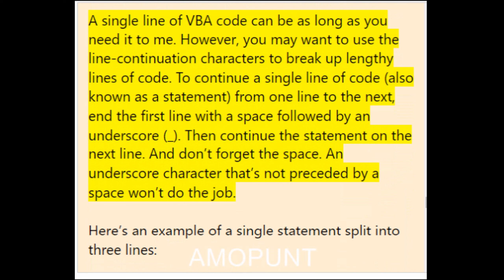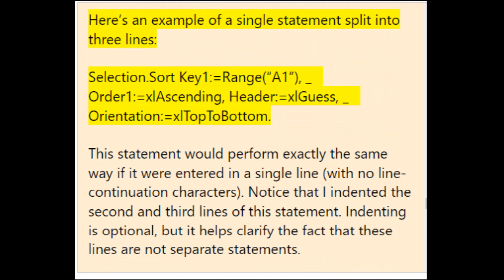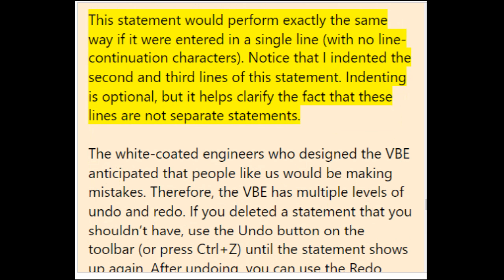A single line of VBA code can be as long as you need. However, you may want to use line continuation characters to break up lengthy lines. To continue a statement from one line to the next, end the first line with a space followed by an underscore, then continue on the next line. For example: Selection.Sort Key1:=Range("A1") _ Order1:=xlAscending, Header:=xlGuess _ Orientation:=xlTopToBottom.